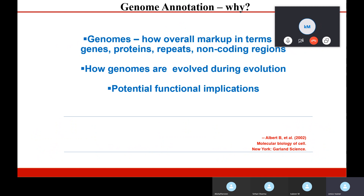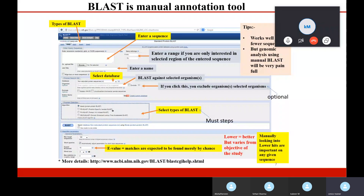Why do we study the genome and annotate it, and why do BLAST? Because we want to see what is inside a genome and how the genome can tell us the functional implication of a protein, a set of proteins, or a set of non-coding regions. Therefore we need better and better genome annotation. We already know how to use BLAST, which we discussed previously.